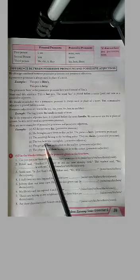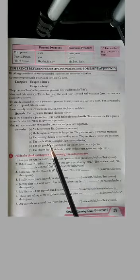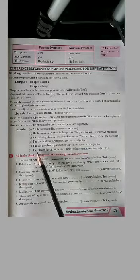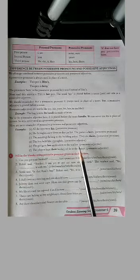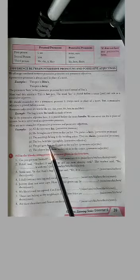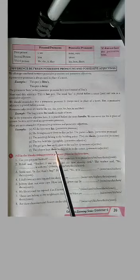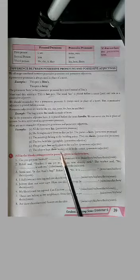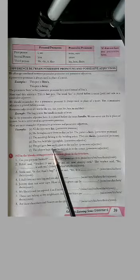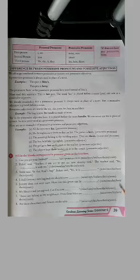The boy held his toys tightly. So it is used before noun toys. So it is possessive adjective. The girl gave her application to the teacher. Application is your noun and it is used before noun. It is possessive adjective. The players kept their hockey sticks in the corner. Your hockey sticks are nouns and their is used before noun. So it is possessive adjective. I hope children you must have understood.